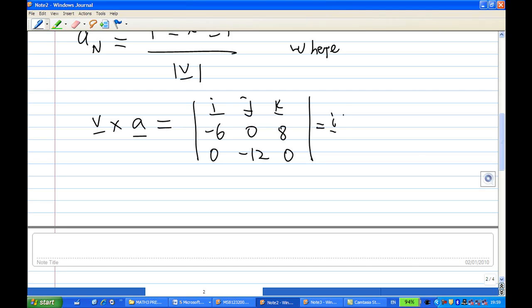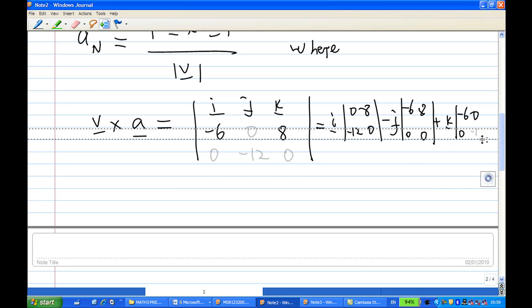Now when you expand this, you get i times 0 times 8 minus minus 12 times 0, minus j times minus 6 times 0 minus 8 times 0, plus k times minus 6 times minus 12 minus 0 times 0. And this will give you, altogether, 96i plus 0j plus 72k.